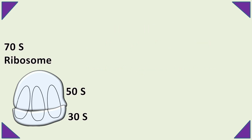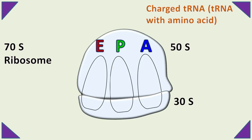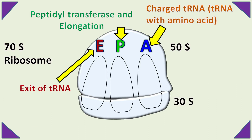The ribosomes have three sites that play an important role in protein synthesis. These sites are termed as E-site, P-site, and A-site. The A-site is a region where the charged tRNA binds. The P-site is a region that has peptidyl transferase activity and plays an important role during elongation of protein synthesis. The E-site is a region where the uncharged tRNA exits the ribosome.